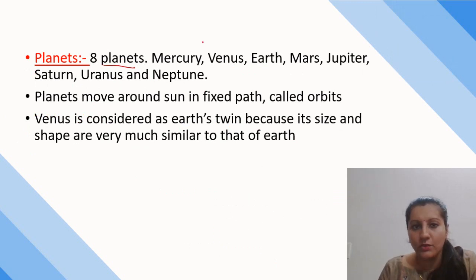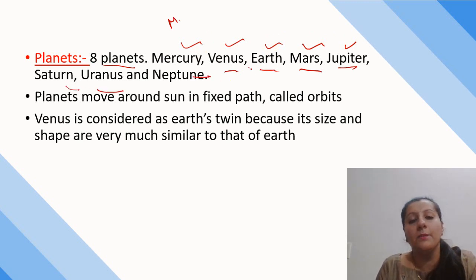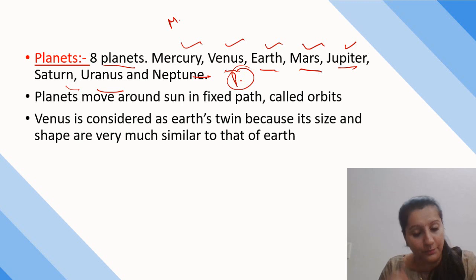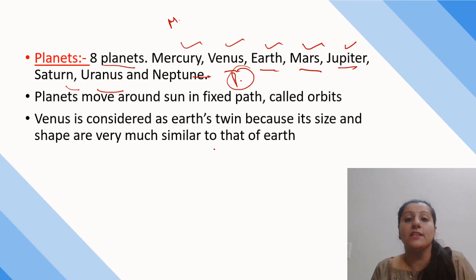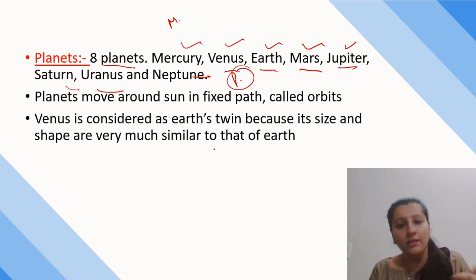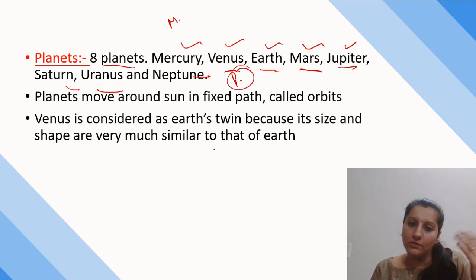There are eight planets: Mercury, Venus, Earth, Mars, Jupiter, Saturn, Uranus, and Neptune — remembered by the mnemonic 'My Very Emotional Mother Just Serves Us Nine.' Earlier there were nine planets including Pluto, but Pluto was reclassified and is no longer considered a planet. You should search for the reason why Pluto was removed — write your answer in the comment box!